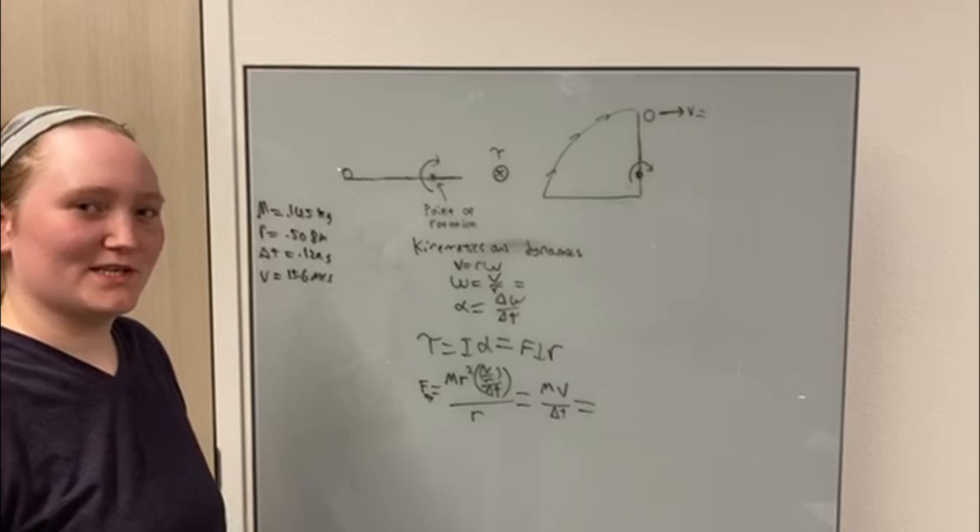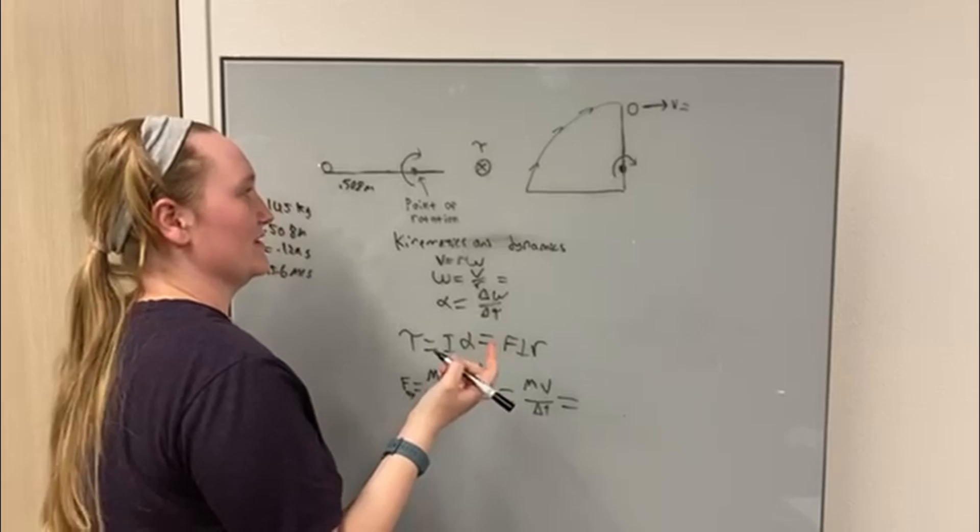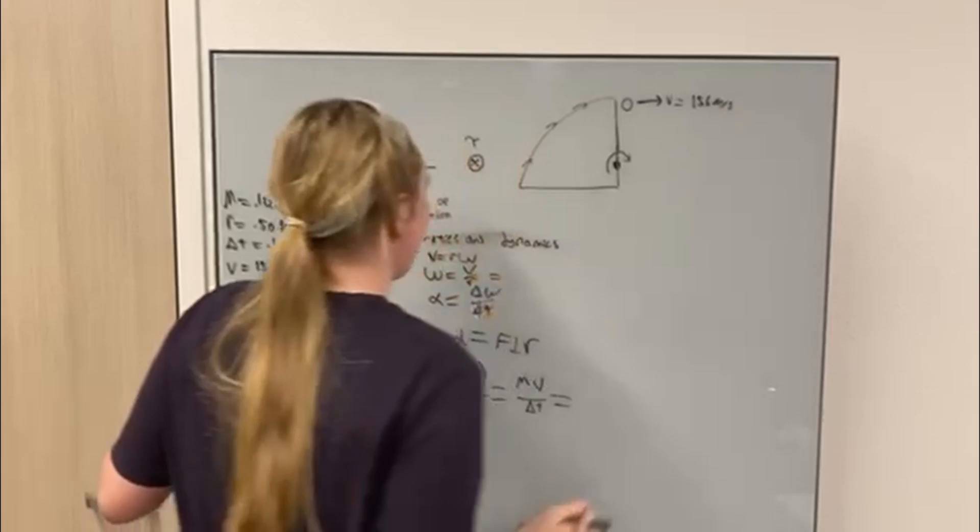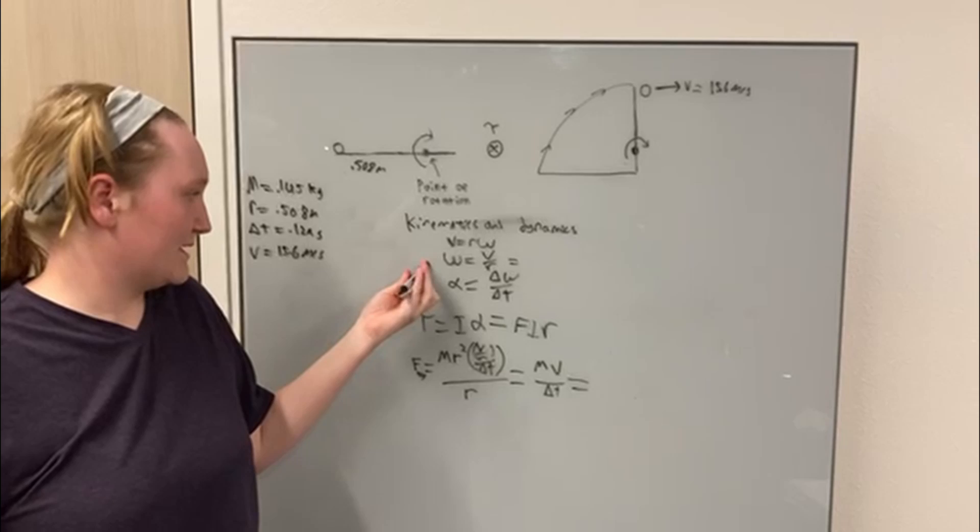So we know that the radius is 0.508 meters, and we know that the velocity after the ball was released is 15.6 meters per second. Using these two values, we can find the angular velocity because velocity equals radius times angular velocity.